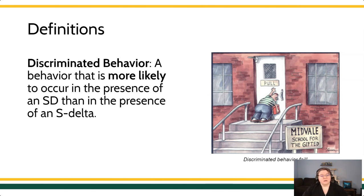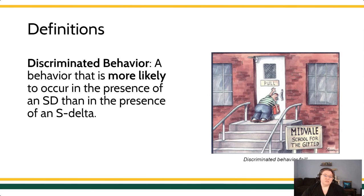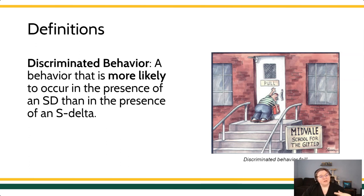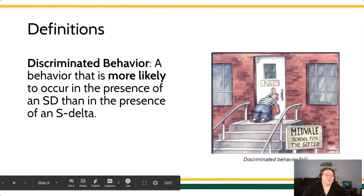In order to have a discriminated behavior, you'll have to have one response become more likely in the presence of that stimulus than in its absence — and we don't see that here. Come on back. We'll give some more examples of discrimination training and how it occurs in practice, and then we'll apply and synthesize this information with other content you may have learned in other courses. I'll see you guys next time.